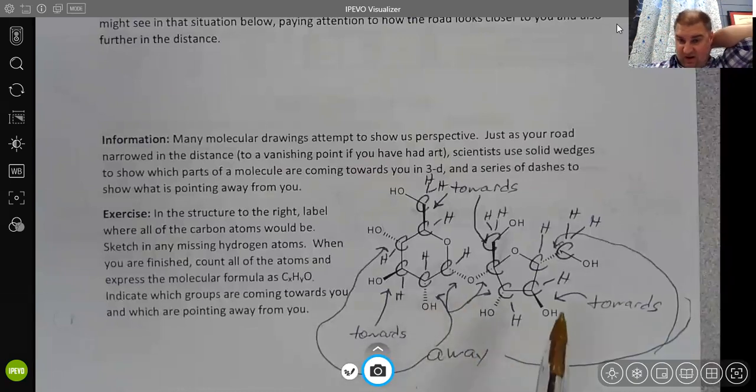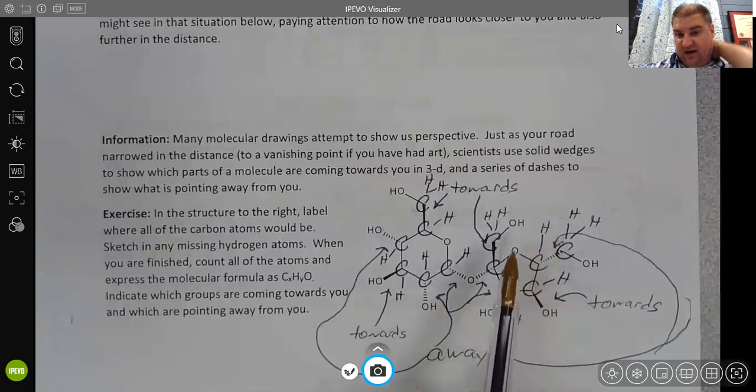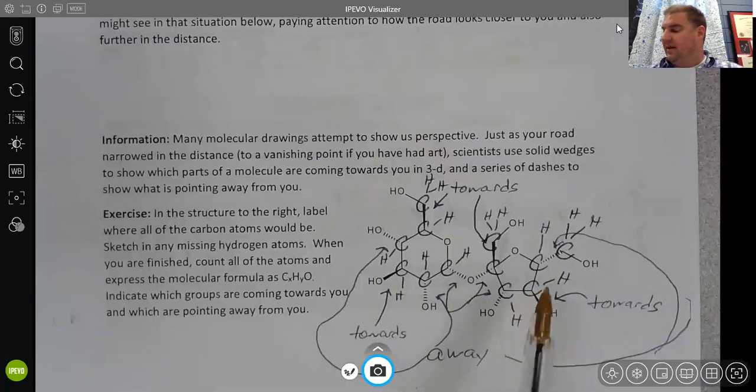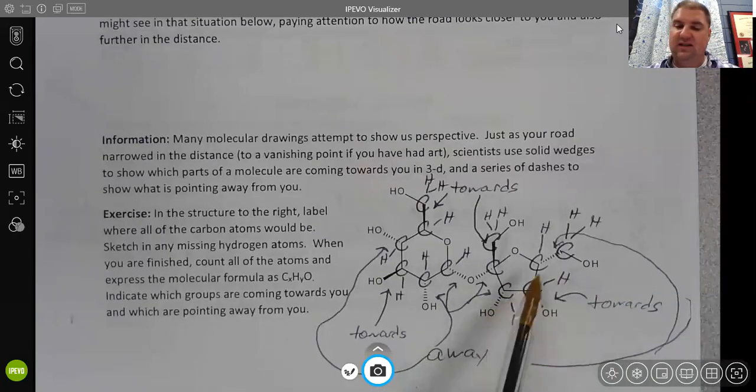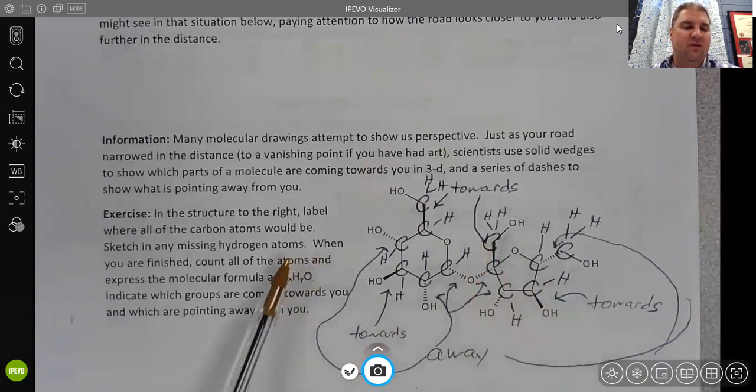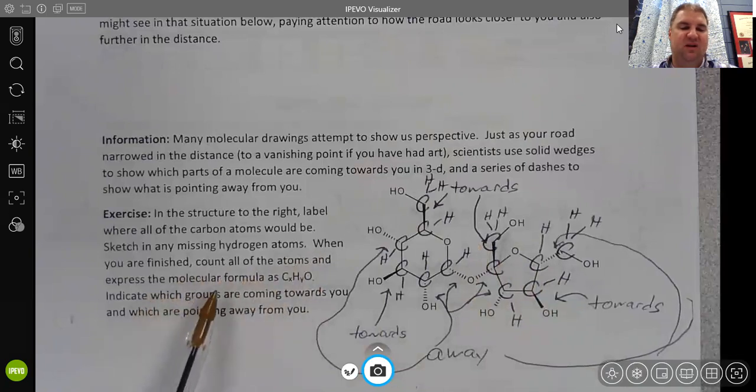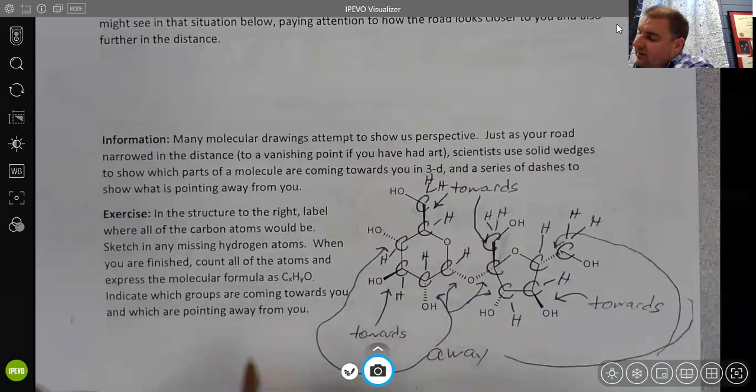And as a double check, all of your carbons should have four bonds going to them. And these will include the wedges and the dashes. The wedges and the dashes will count as single bonds. When you are finished, count all of the atoms and express the molecular formula as CxHyOz. There's a Z that's left off there.